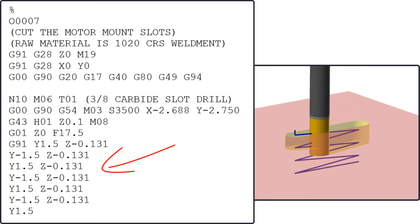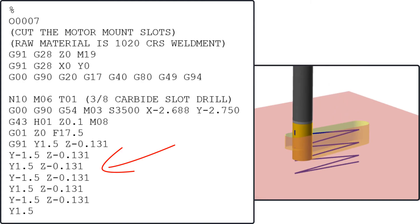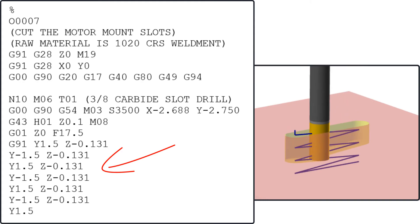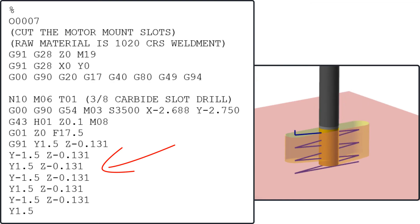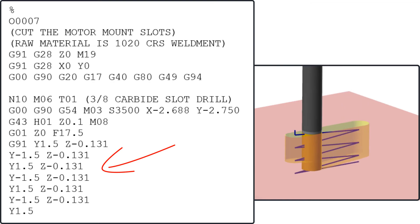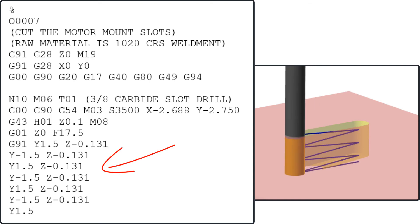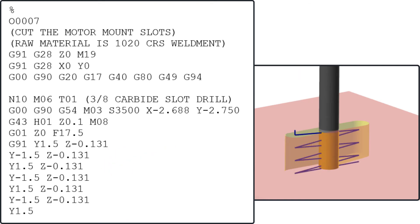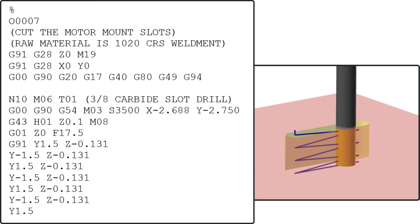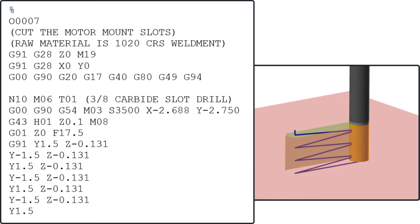These two lines of incremental code will now be repeated 3 times until the cutter is at Z-0.786. Then it will feed the Y axis only to remove the remaining material. In the next video I'll demonstrate how to take the finished pass to clean up this slot to the final size.